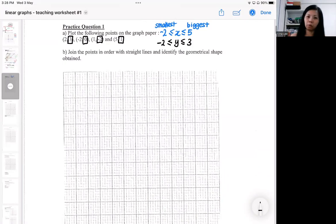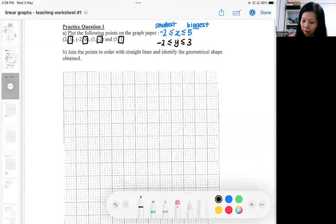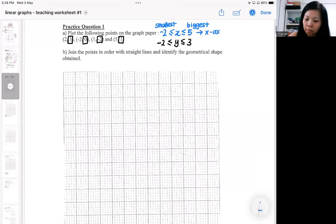So later on when you draw, you make sure that your horizontal is enough from minus two to five. You must make sure your x-axis must be sufficient. And then you also must make sure your y-axis is sufficient from minus two to three. The next thing will be I need to explain the graph paper.